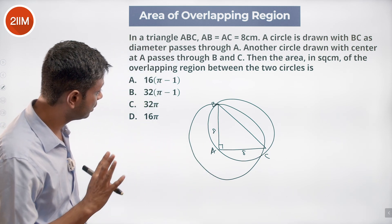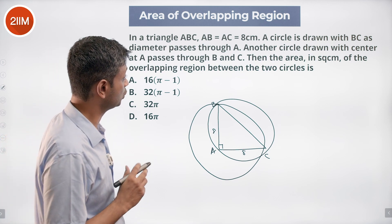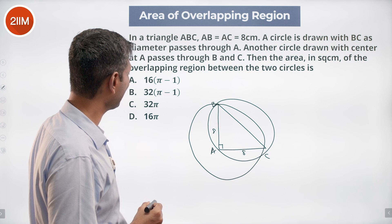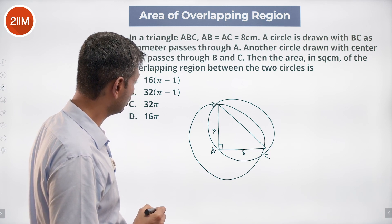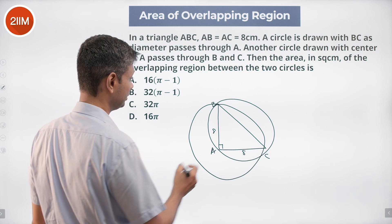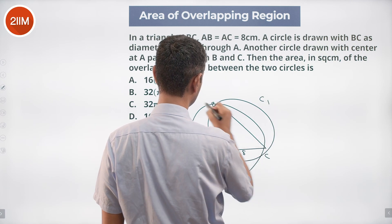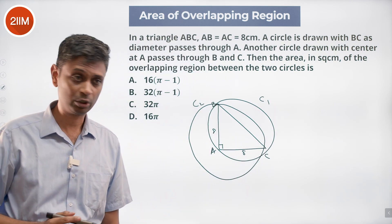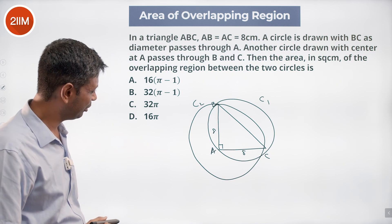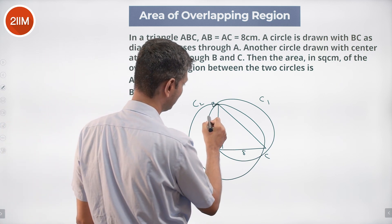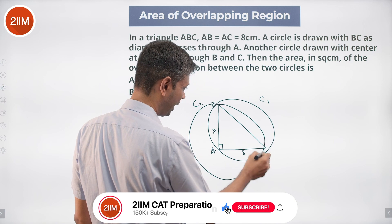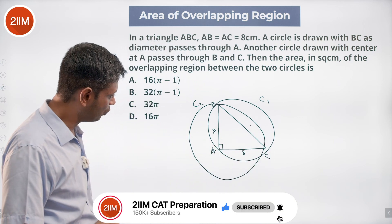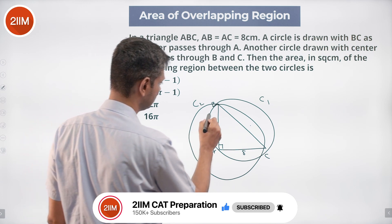Radius is 8. We have circle 1 and circle 2. We want to find the area in square centimeters of the overlapping region between the two circles. Circle 1 and circle 2 overlap, and we're going to count this entire semicircle and then calculate this segment.